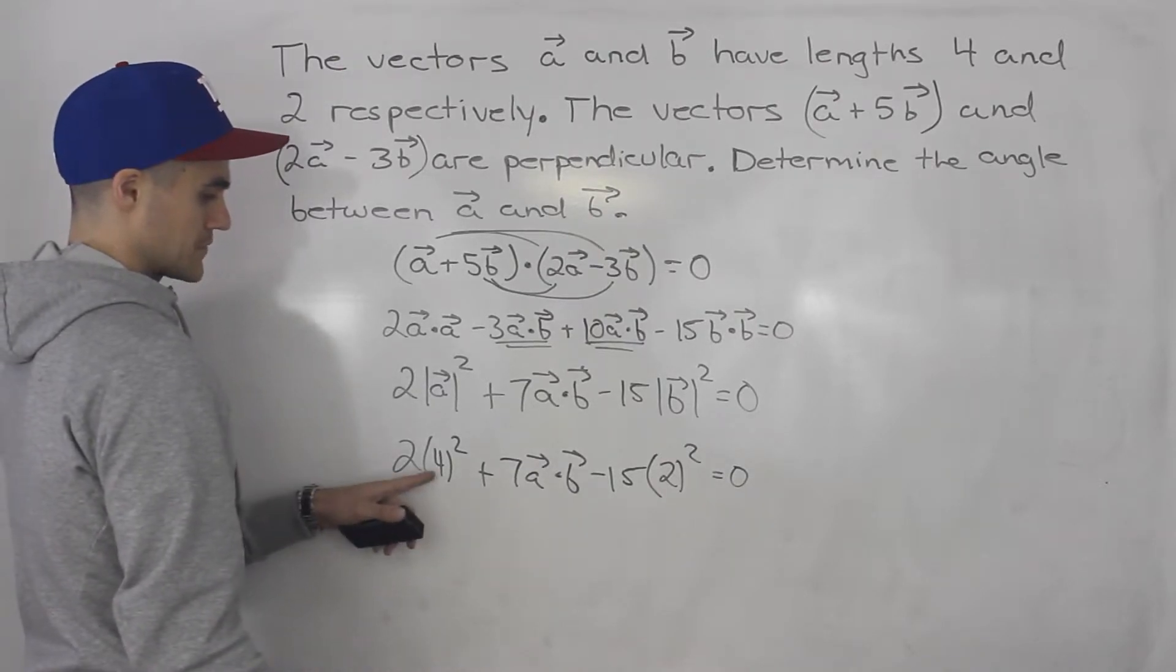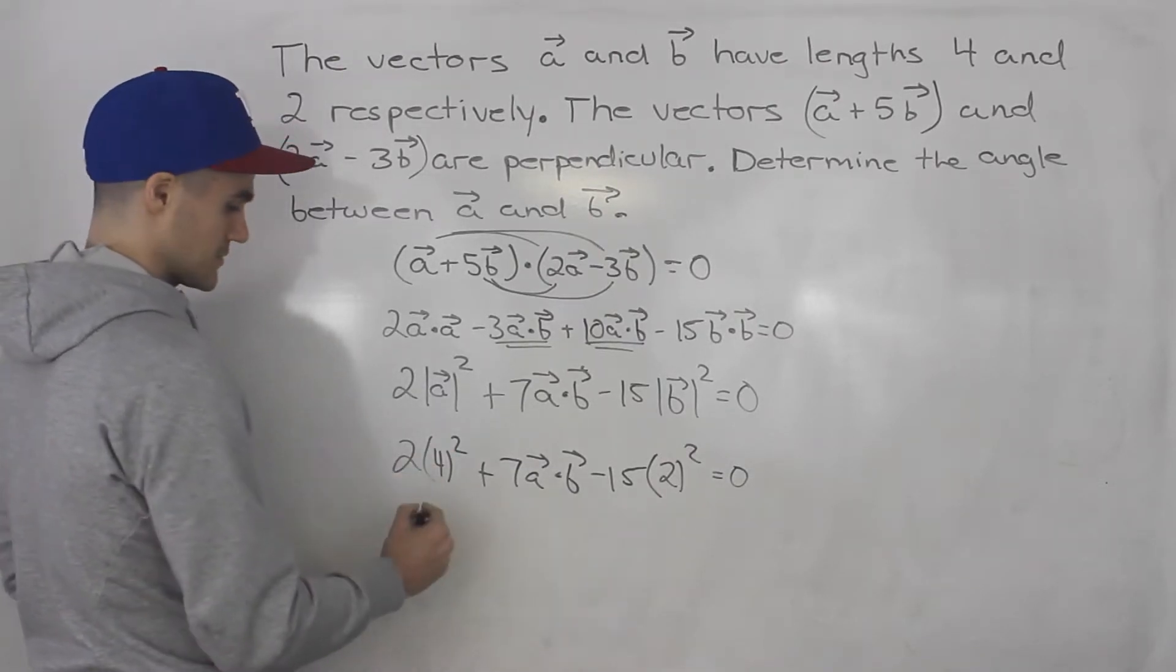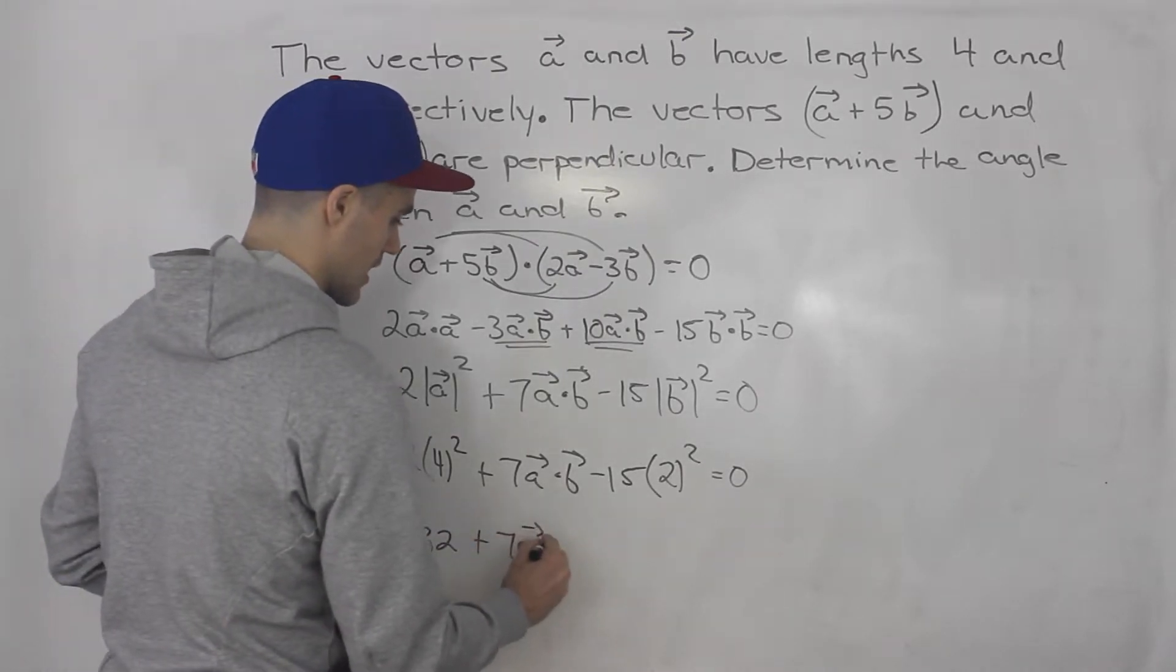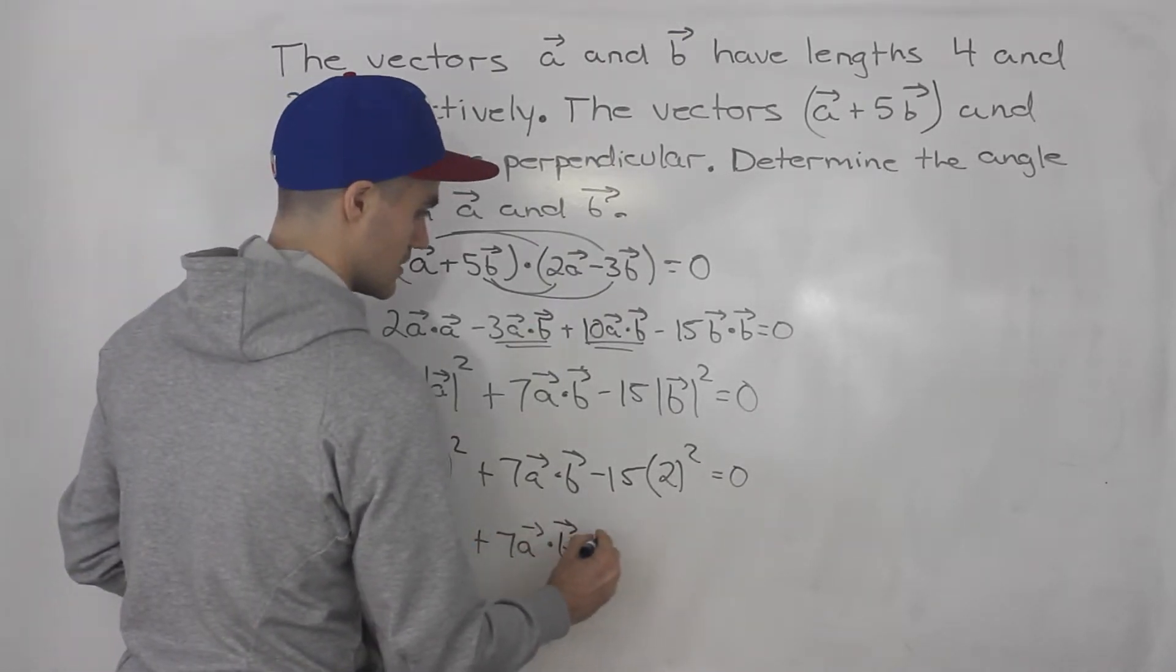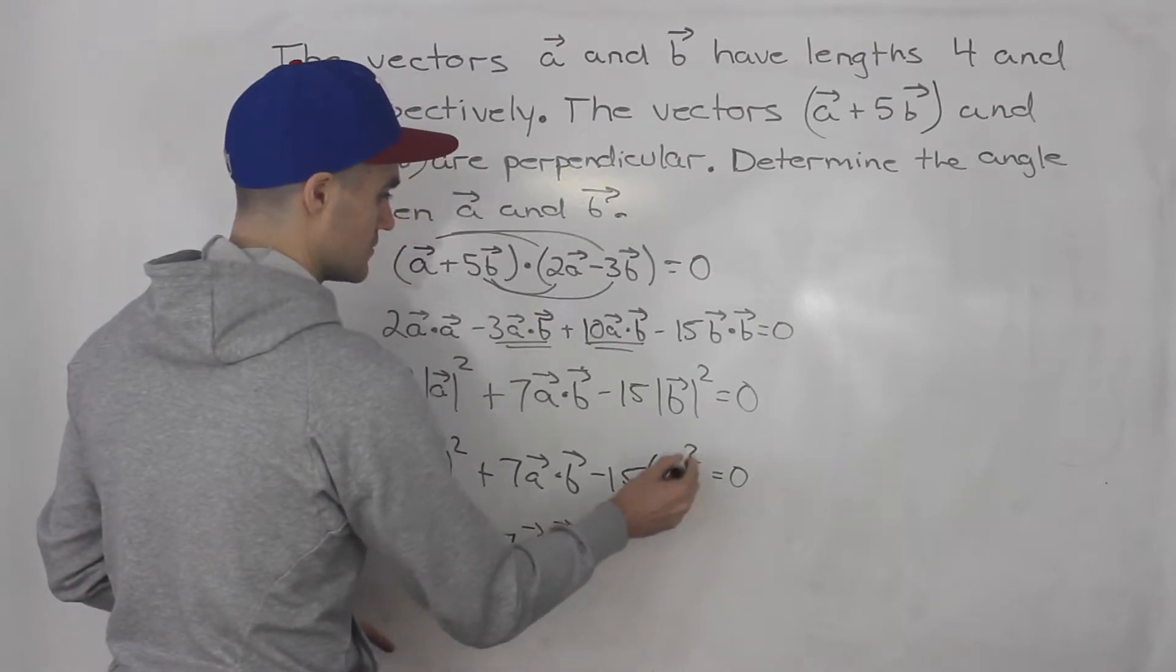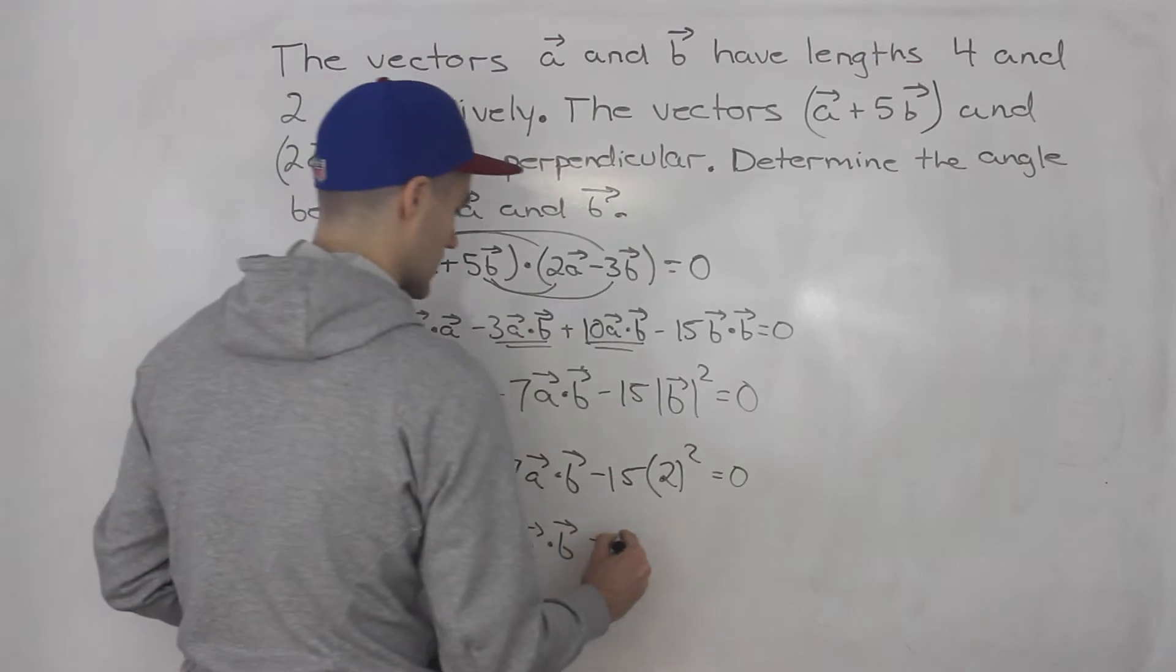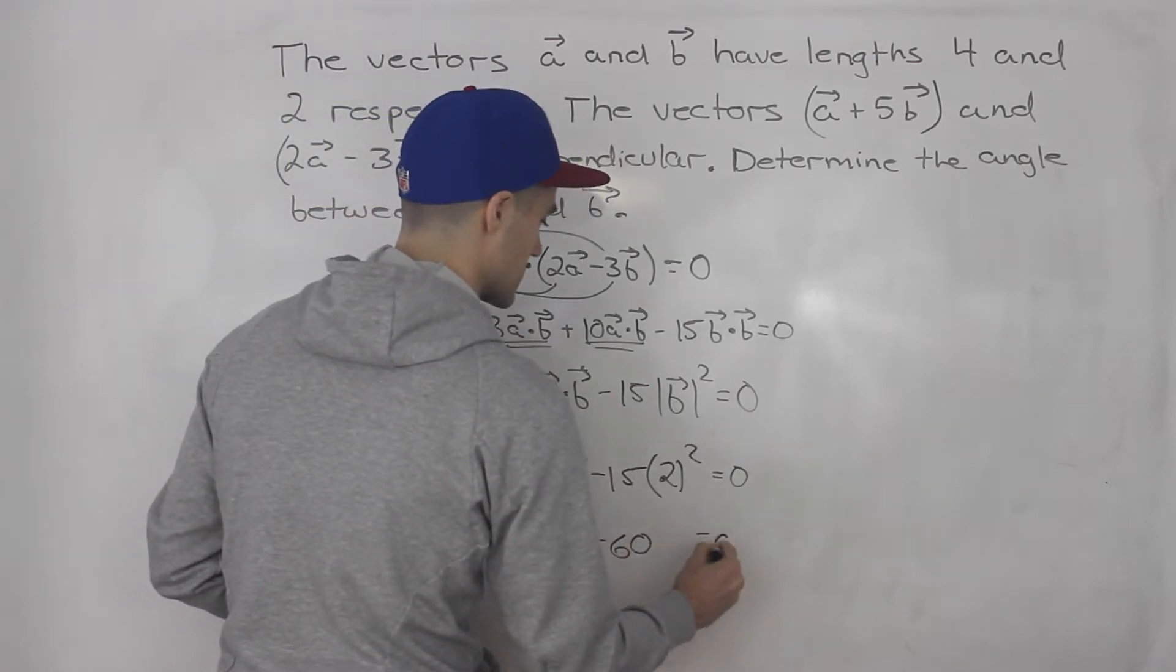So 2 times 4 squared, 4 squared is 16 times 2 is 32 plus 7a·b. And then this is 2 squared is 4 times 15 is 60. This is a minus, so it's -60 = 0.